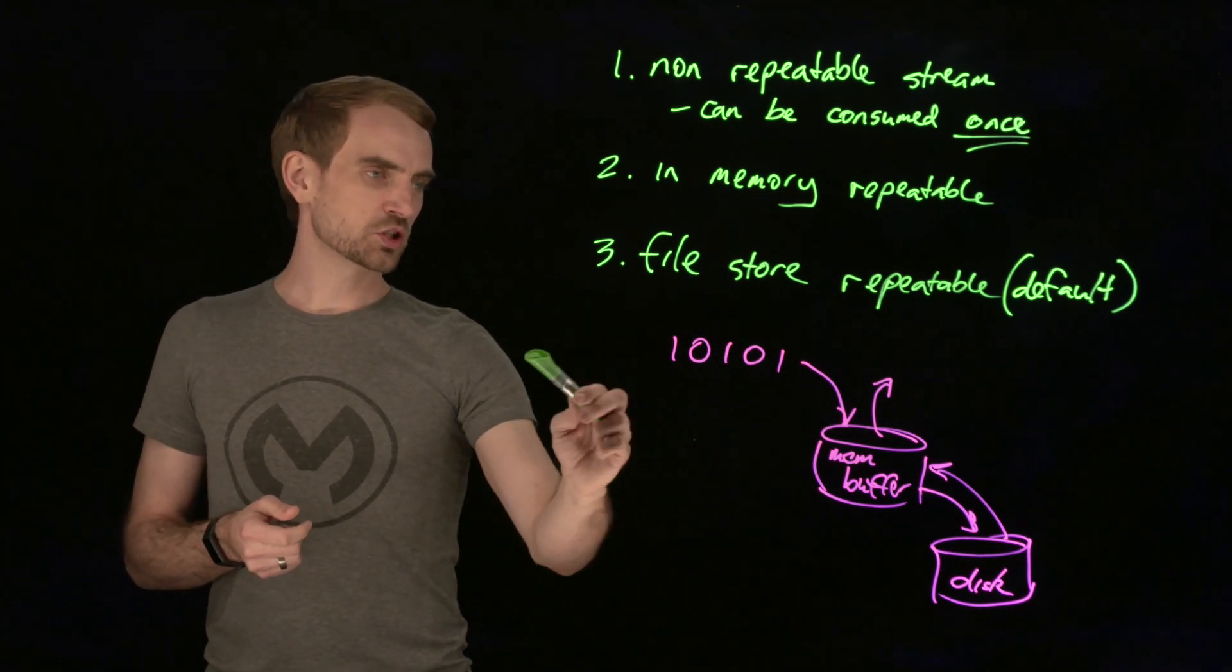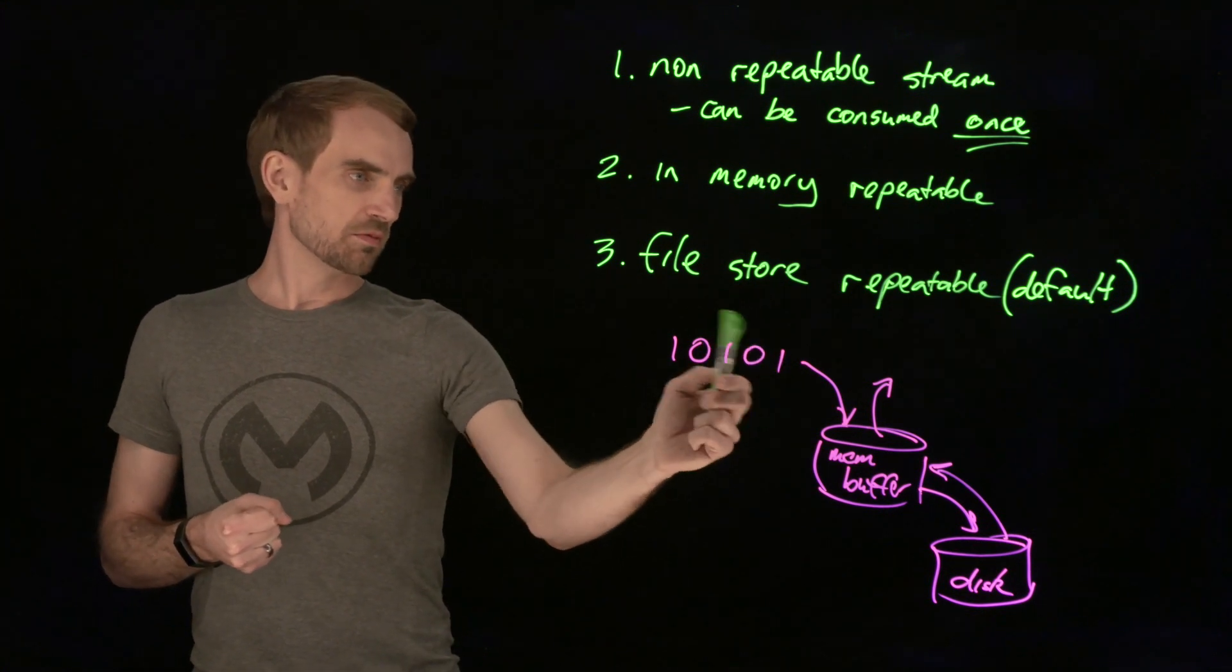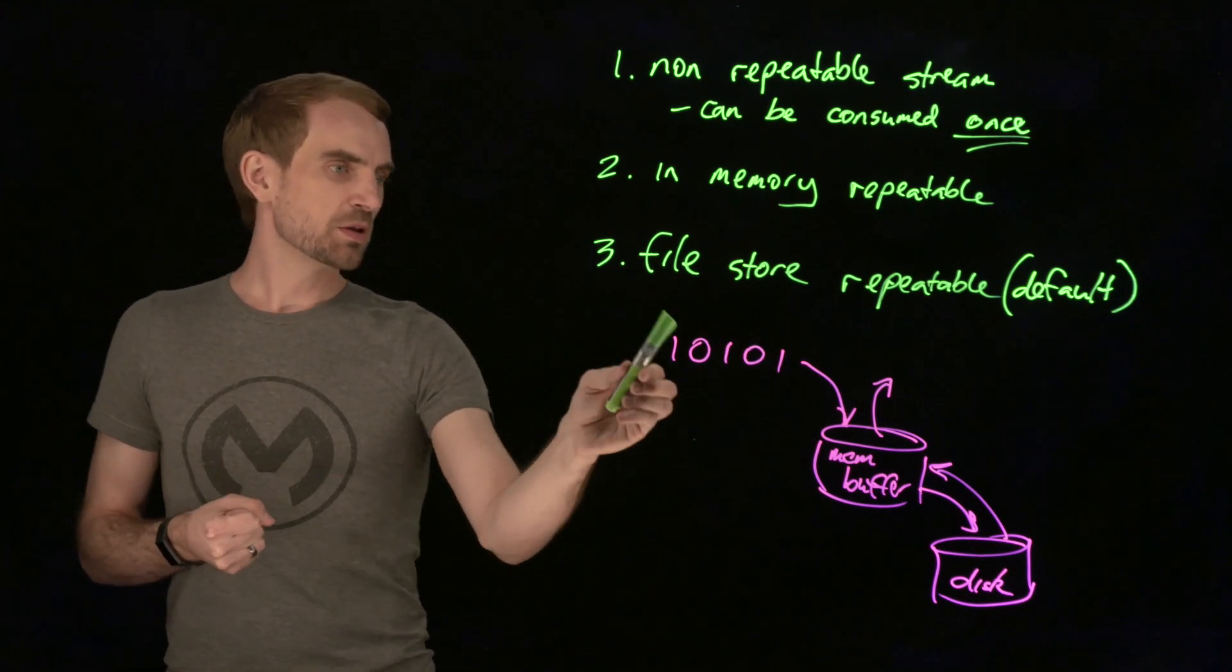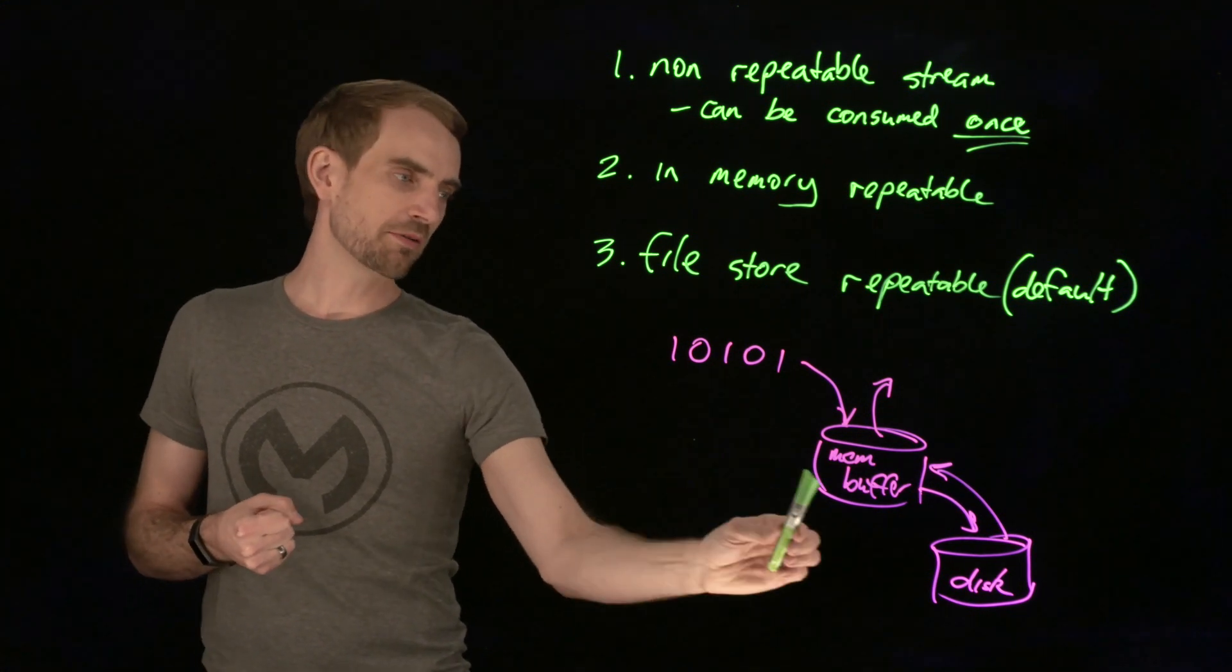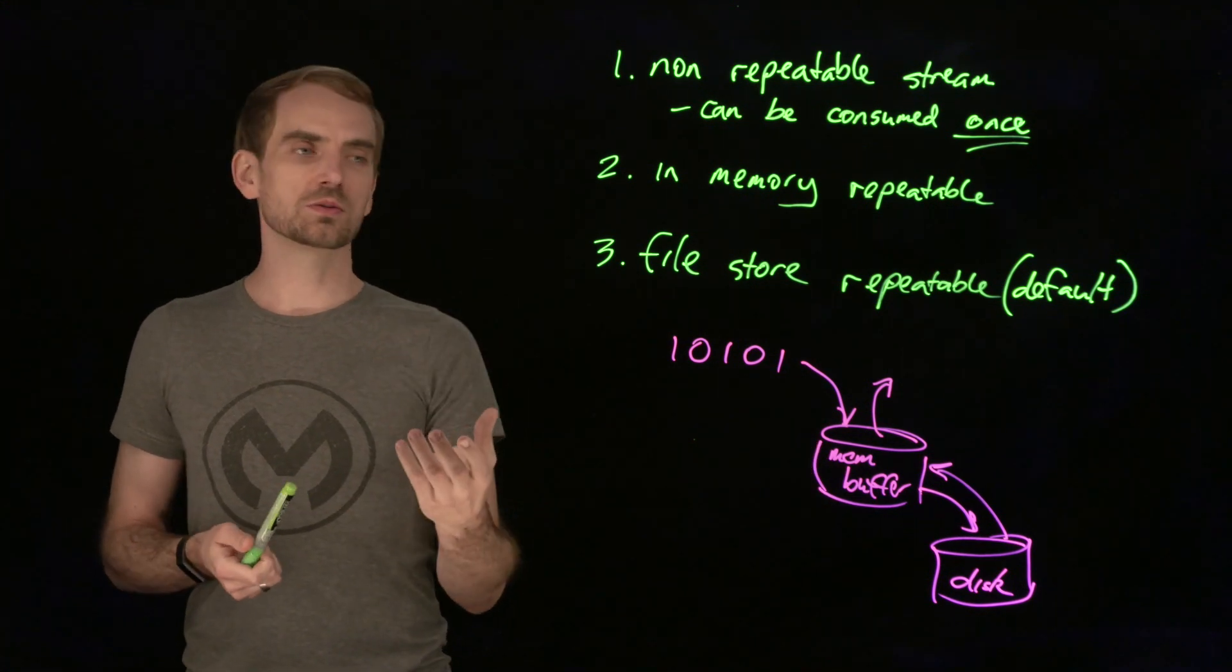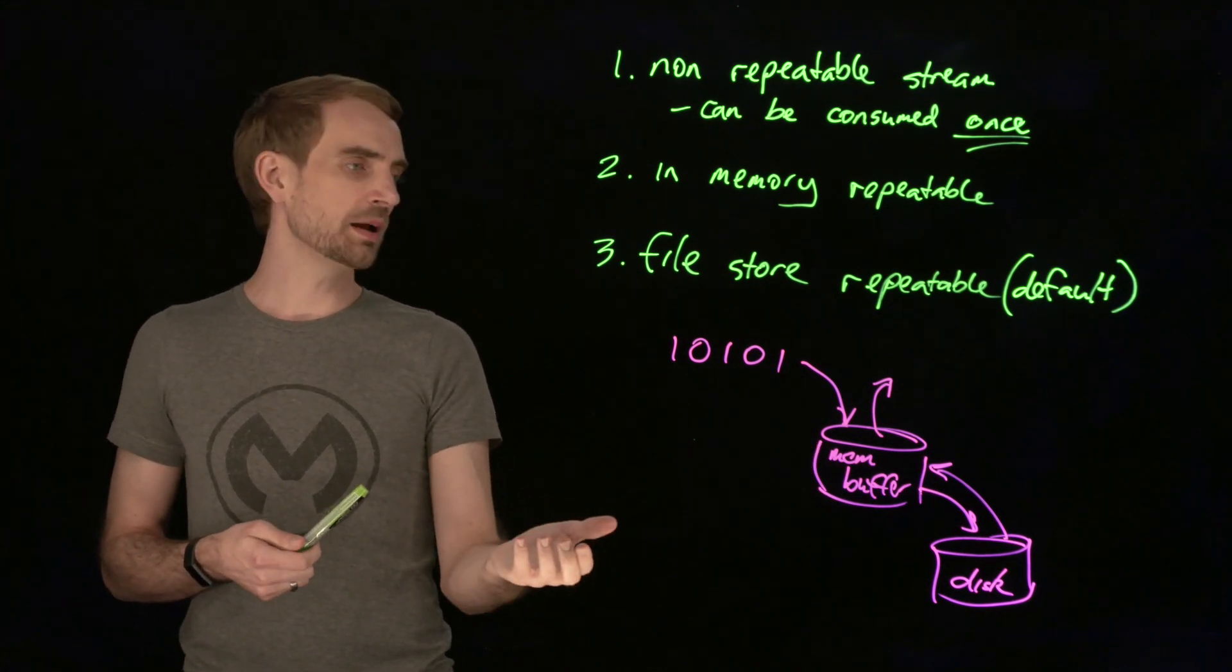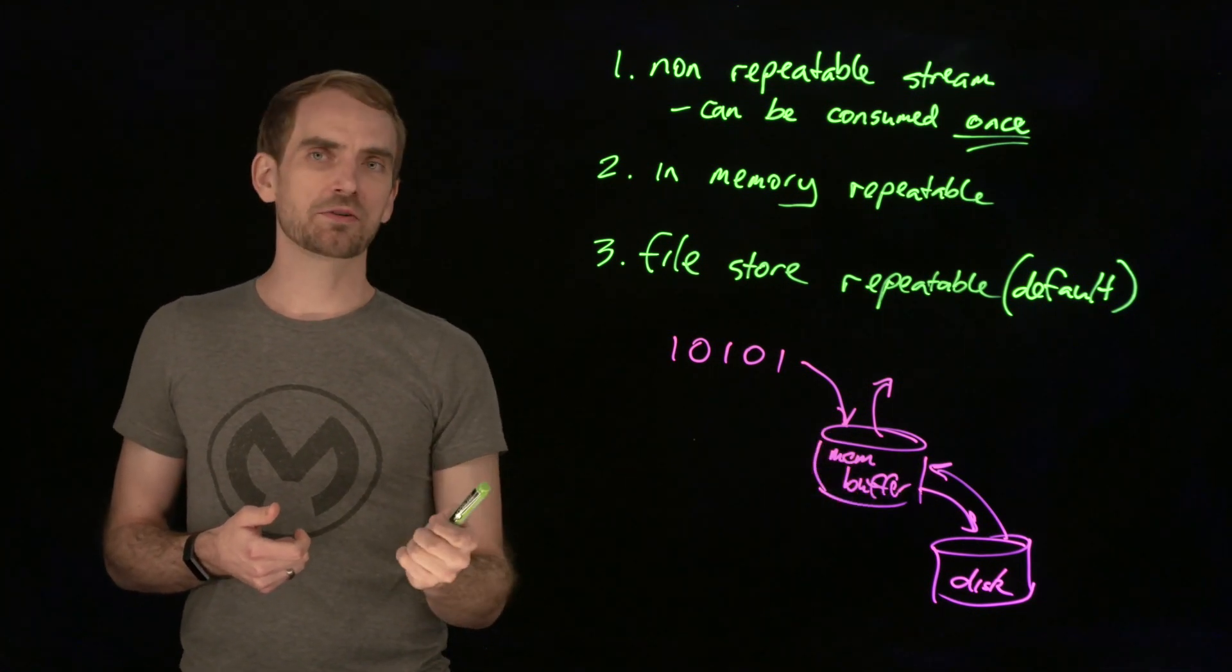So your stream, as you consume it, normally it would be throwing the bytes away, but because this is a repeatable, it will buffer it as part of the work that goes on. And then if someone tries to read it a second time or a third time, it will come out of that in-memory buffer. So point two uses an in-memory buffer.